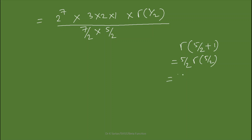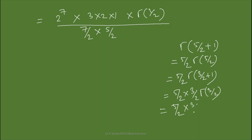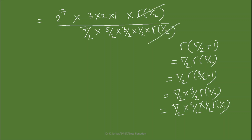Continuing, Gamma(5/2) = (3/2)·Gamma(3/2), and Gamma(3/2) = (1/2 + 1)·Gamma(1/2) = (1/2)·Gamma(1/2). Therefore Gamma(9/2) = (7/2)·(5/2)·(3/2)·(1/2)·Gamma(1/2). The Gamma(1/2) in the numerator and denominator cancel.